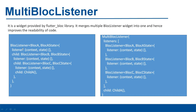If we nest multiple block listeners, this will be the code as written on the left-hand side of this slide. The first block listener takes block A and its corresponding block A state. As a child of that block listener, again a block listener has been used which takes block B and block B state. As a child of that, another block listener is used with block C and block C state — and this decreases the readability of the code.